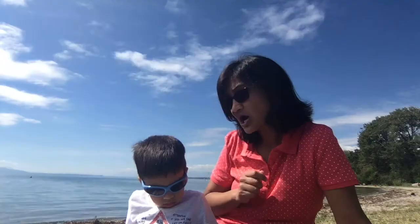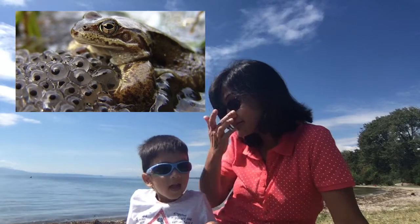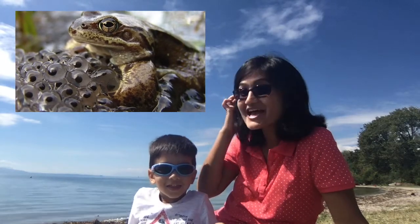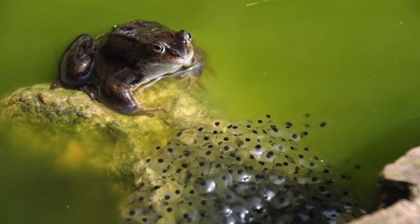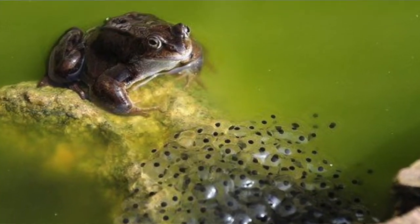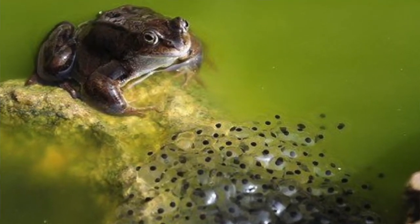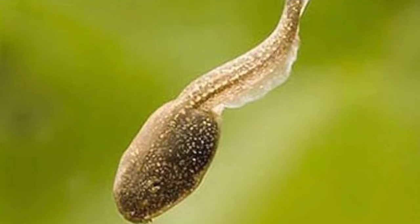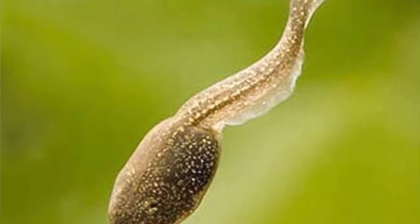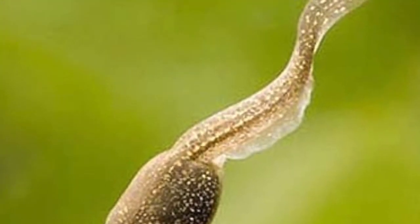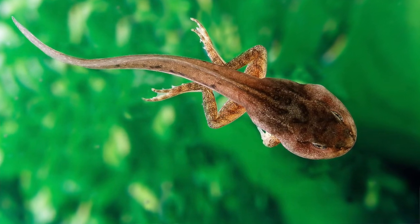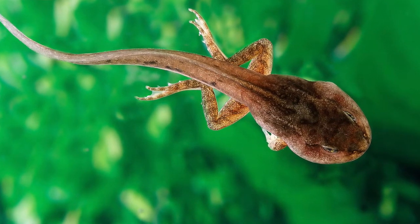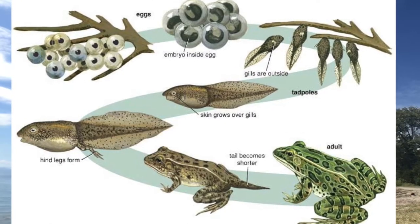How about snakes? Snakes lay eggs — snakes are reptiles, just like crocodiles, and they lay eggs. How about frogs? Frogs are amphibians. When frogs are born, they don't have lungs to breathe air, so they have gills and breathe inside the water, just like fish.